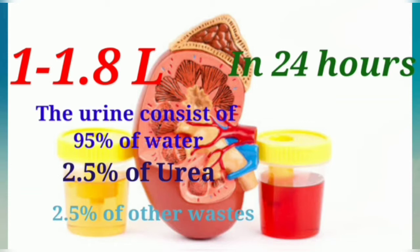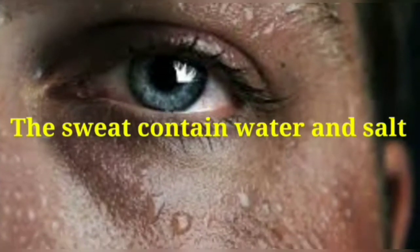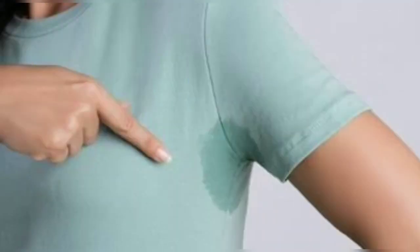We have all experienced that we sweat on a hot summer day. The sweat contains water and salts. So in summer, sometimes white patches are formed on our clothes, especially in areas like underarms. These marks are left by the salts present in the sweat.